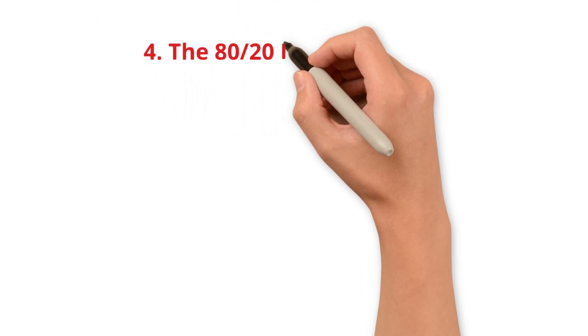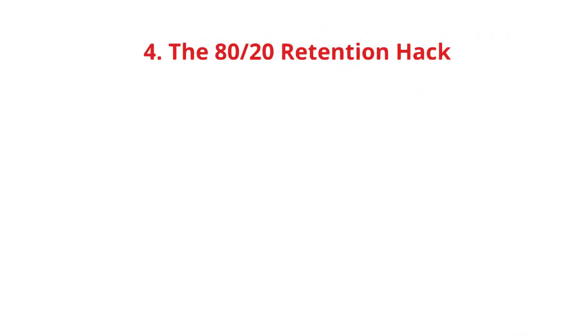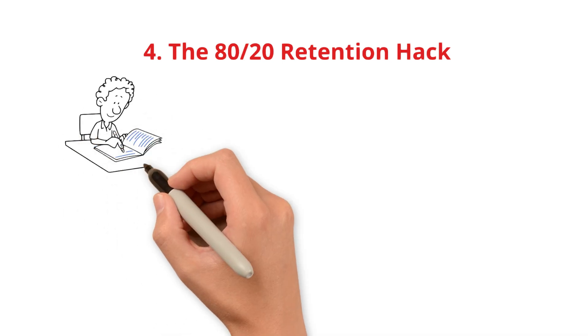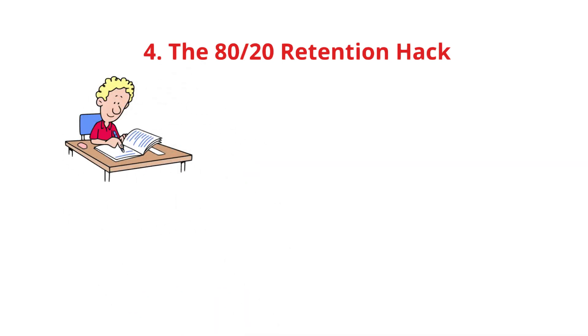Tip number 4. The 80-20 retention hack. Active recall. Most students waste time rereading and highlighting, but these don't help you remember. The secret: Active recall.